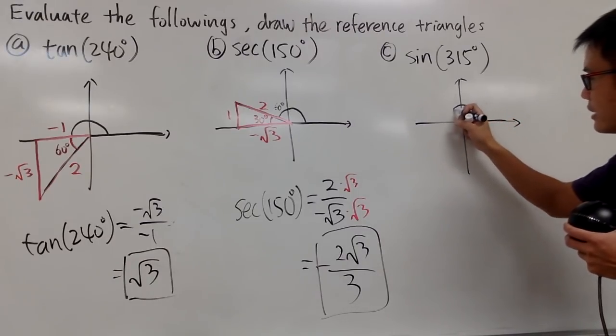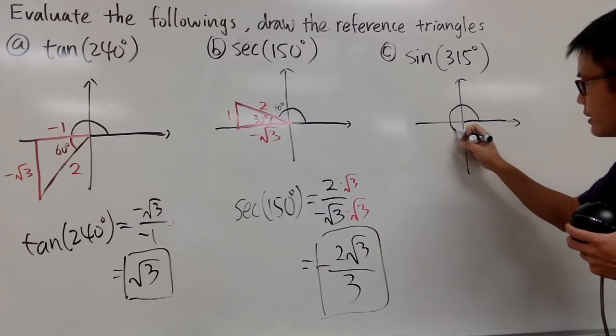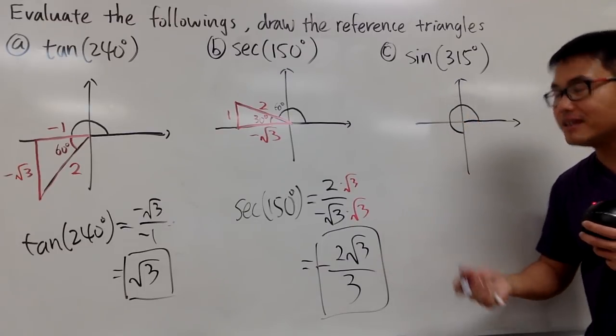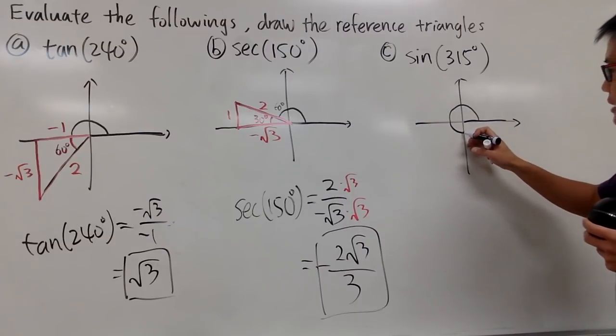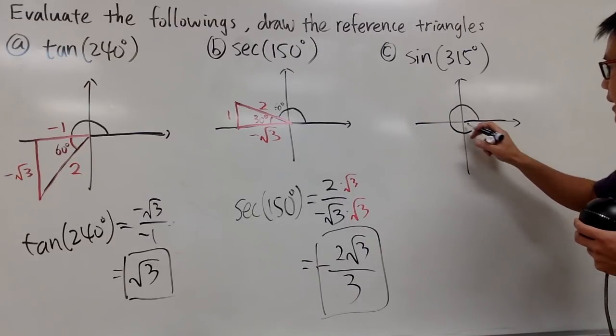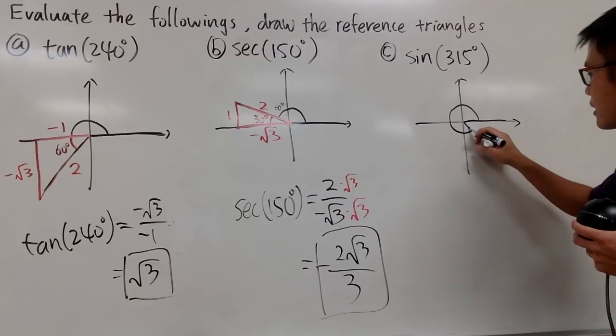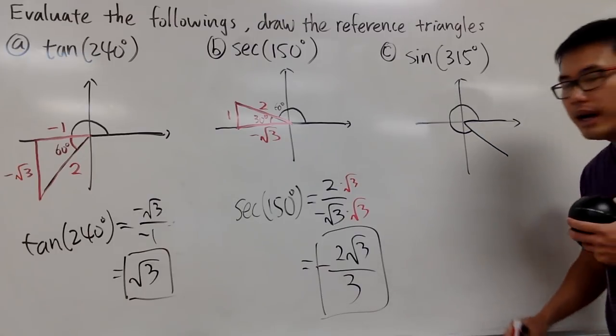From here to here is 180, and then this right here is 270. I need 45 in order to get to 315. So 45 will be right here. And we can just connect this like this.